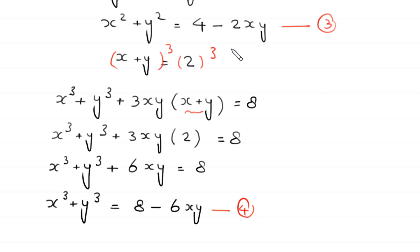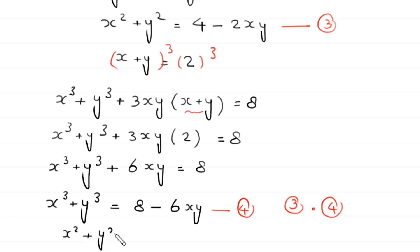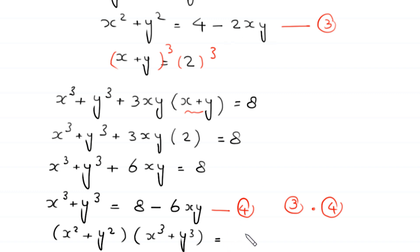We multiply equation 3 by equation 4. So the left-hand side is (x squared plus y squared) times (x cubed plus y cubed), and the right-hand side is (4 minus 2xy) times (8 minus 6xy).